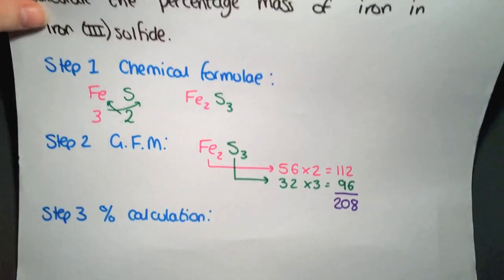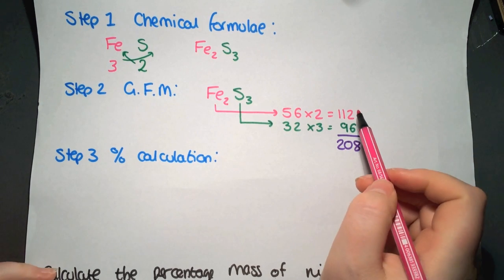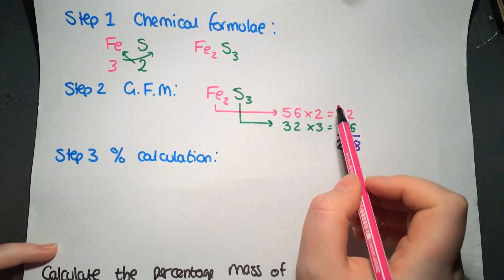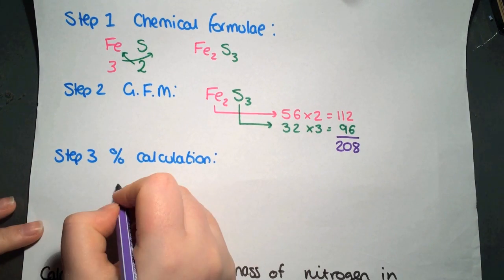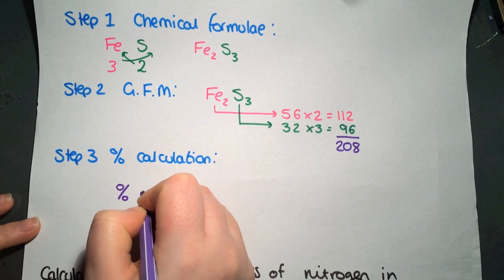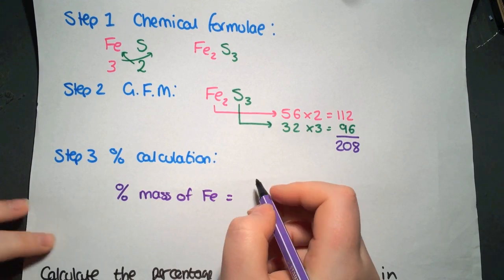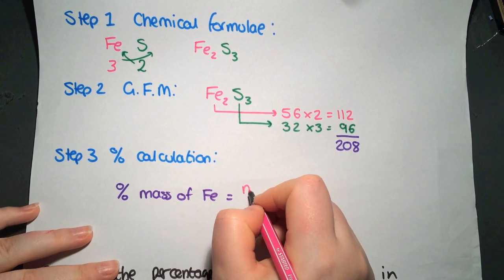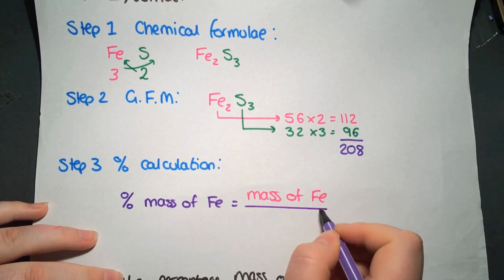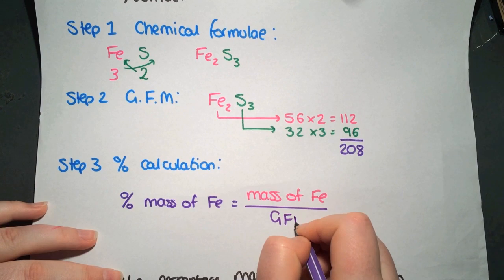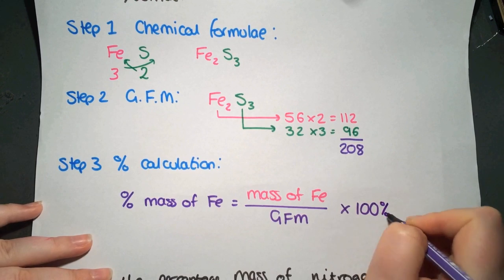We're now simply carrying out a straightforward percentage calculation, where we're looking at what part of the whole is the iron. So you need to take into account the fact that there are two irons there. So for our percentage calculation, we're doing percentage mass of Fe. So you need to have the mass of Fe in the compound divided by the gram formula mass of the full compound, finally multiplied by 100%.